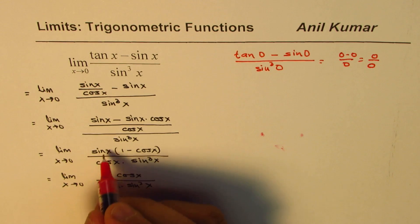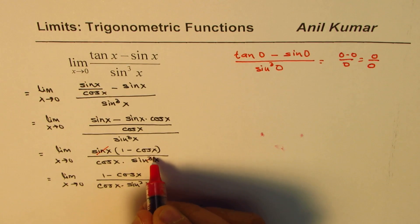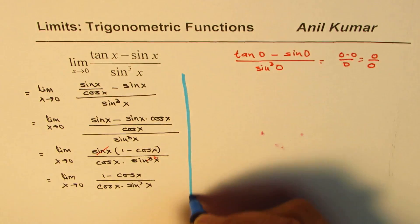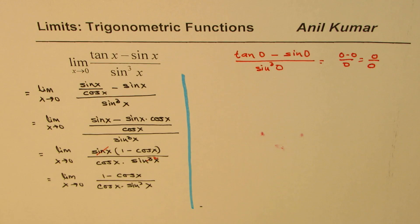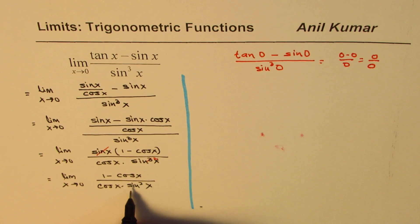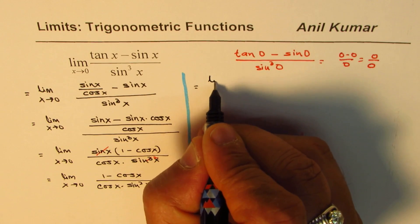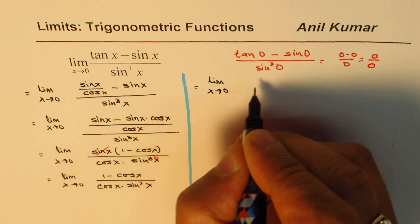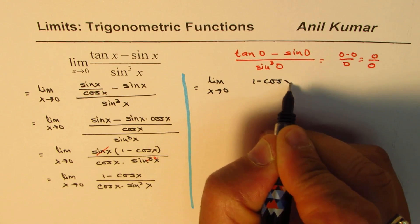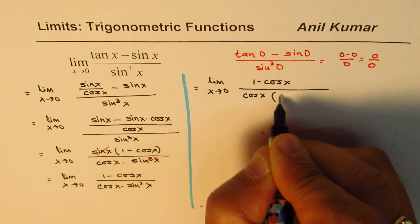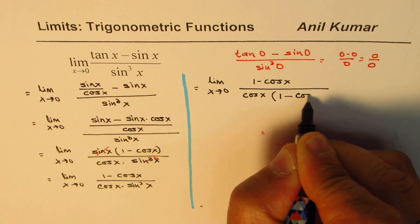1 minus cos x divided by cos x times sin square x. So what we did was we just cancelled the sin x — it becomes sin square x. Now, sin square x could be written as 1 minus cos square x. So we will write this as limit x approaches 0, with 1 minus cos x in the numerator and denominator written as cos x times 1 minus cos square x.